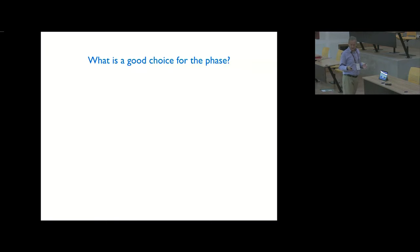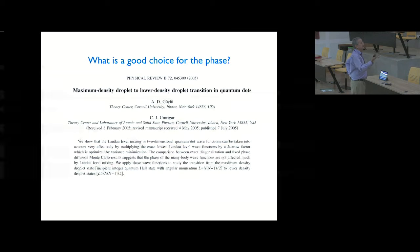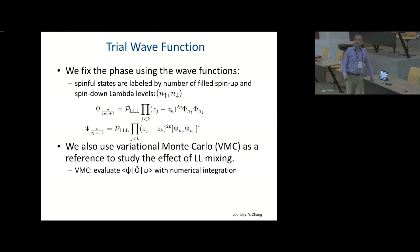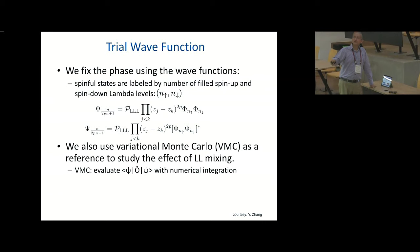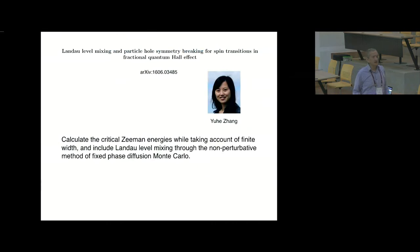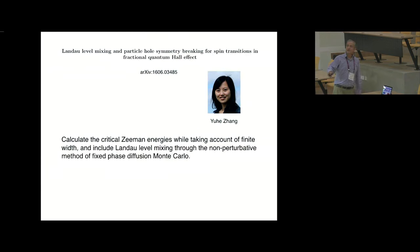What is a good choice for the phase? There was work showing that Landau level mixing does not change the phase significantly. So if you start with the ground state of the lowest Landau level and make that phase choice, it remains pretty good even in the presence of Landau level mixing. We fix the phase using our wave functions known to be extremely good within the lowest Landau level, and do diffusion Monte Carlo. The hero of this work has done all of the calculations including effects of finite thickness and Landau level mixing, all in non-perturbative fashion.